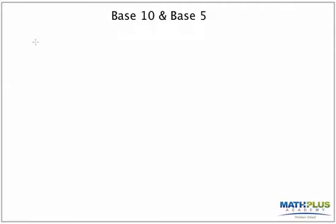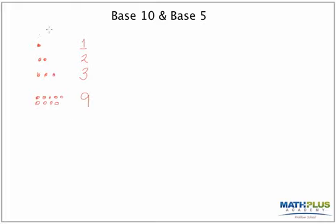Let's do a quick review of base 10. We use digits to represent different amounts of things. So if I were drawing dots, I could simplify this by making the symbol one; two dots we write as two; and we call three dots three. We go on like that until we get up to nine dots. And there's also a situation where we have no dots at all, which we call zero.